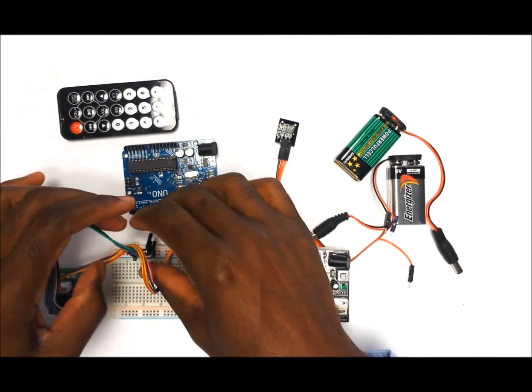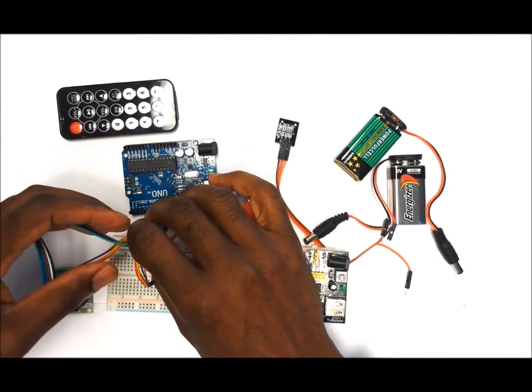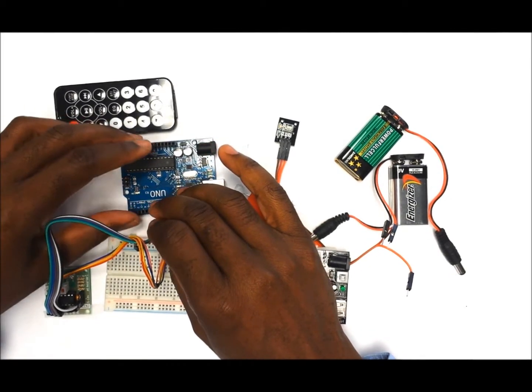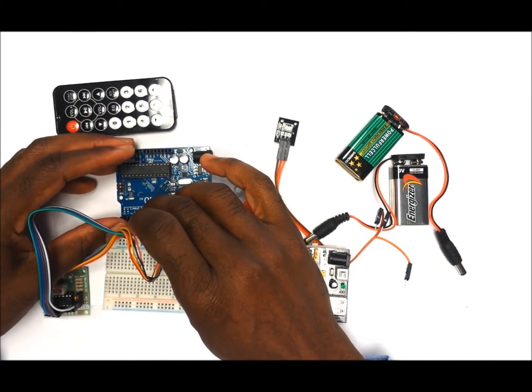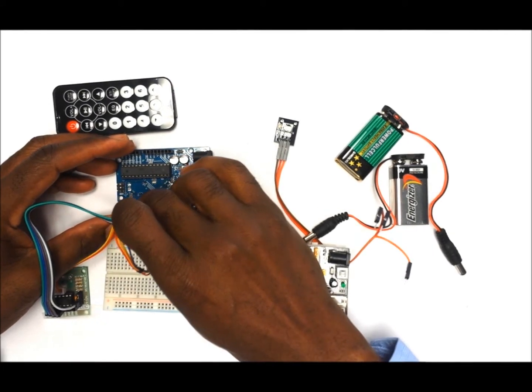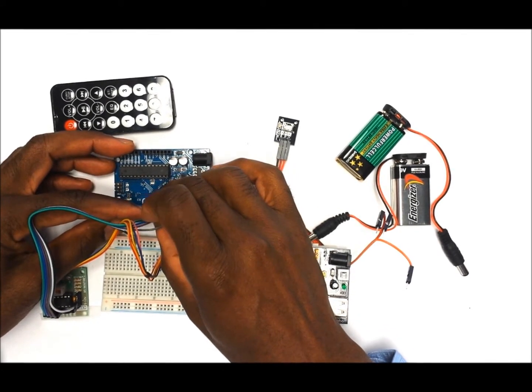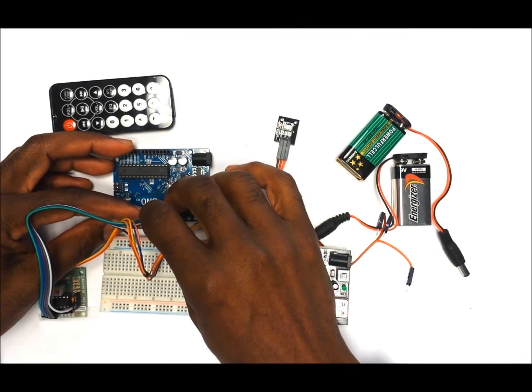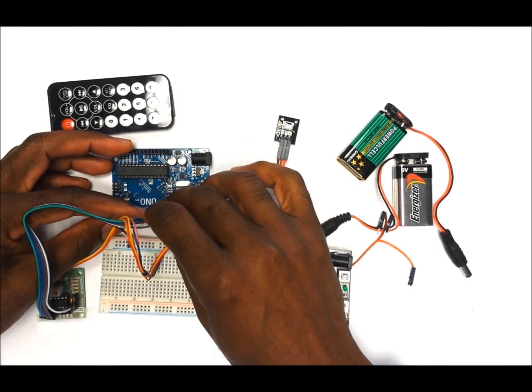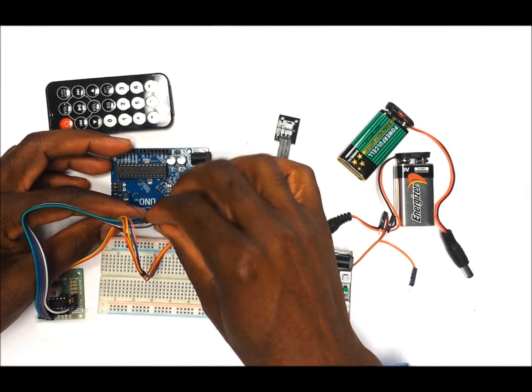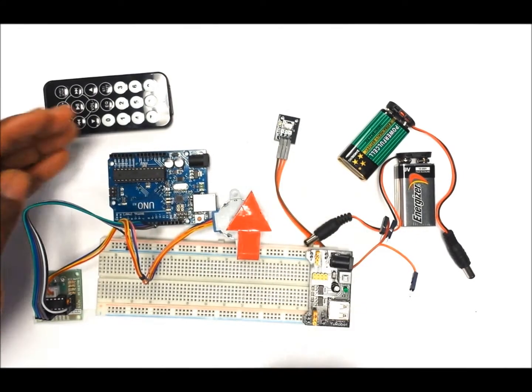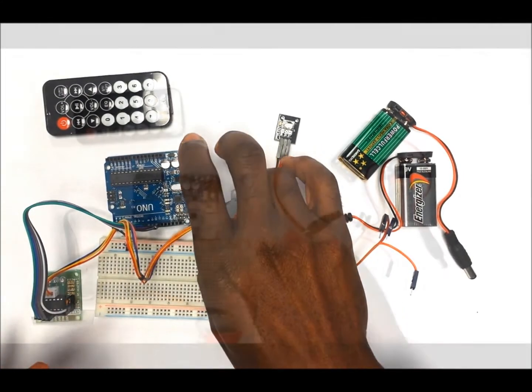Alright, so the next thing that we want to do is to put the other wires from IN1, IN2, IN3, and IN4 onto the Arduino. So IN1 will go into digital pin number 8, IN2 will go into pin number 9, IN3 will go into digital pin number 10, and IN4 will go into digital pin number 11. That completes the wiring of the stepper motor.